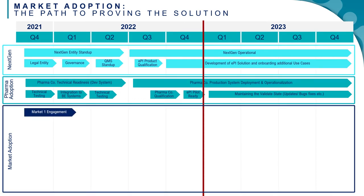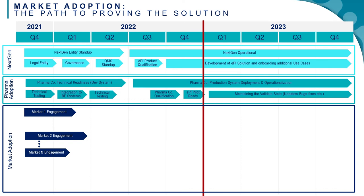The last pillar is market adoption, which starts with engaging a number of markets to find out their interest or willingness to be part of a groundbreaking approach to building a trusted digital platform for patients to manage their healthcare needs. What the pharmaceutical companies and public partners, including participating patient organizations, are building is not just an EPI solution. EPI is the first step in this journey towards a trusted digital platform for patients. If we were only looking at EPI and not beyond EPI, we would not be doing what we're doing as part of this consortium.